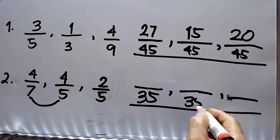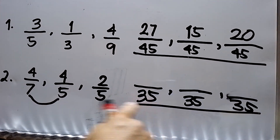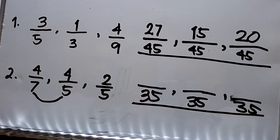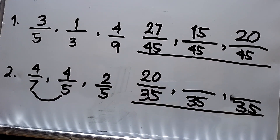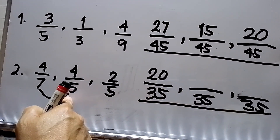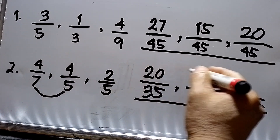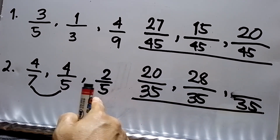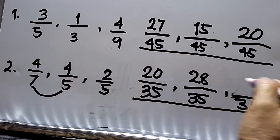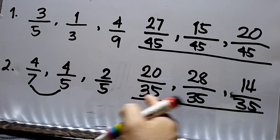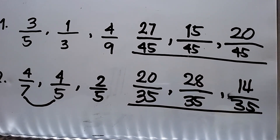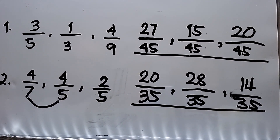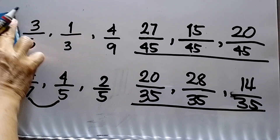So the LCD is 35. 35 divided by 7 is 5, times 4 is 20. The second fraction: 35 divided by 5 is 7, times 4 is 28. The last fraction: 35 divided by 5 is 7, times 2 is 14. So the similar fractions are 20 over 35, 28 over 35, and 14 over 35.